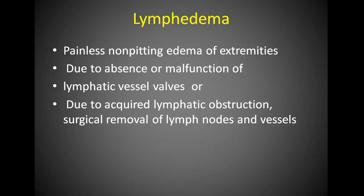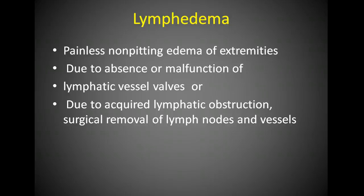Lymphedema is swelling that occurs due to the absence or malfunction of lymphatic vessels or valves, or due to something that obstructs the lymphatic system. If women have a mastectomy — breast and lymph nodes removed — it cuts the drainage from their arms. This can cause severe swelling in the arm on the side where the lymph nodes were removed, because there is no longer a drainage pathway bringing that lymph back to the heart.